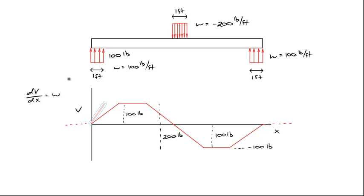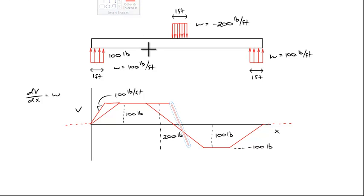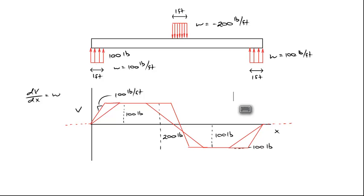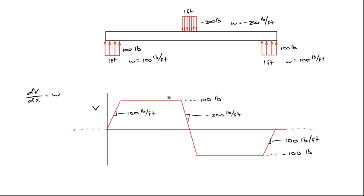Those peak values still remain the same, however we come up to that 100 pounds more quickly with a steeper slope. The slope for the support region is now 100 pounds per foot. The slope over the center becomes steeper as well. We proceed at zero slope in between, come down more steeply through the center load region. If I draw this to scale: come up to 100 pounds with a slope of 100 pounds per foot, drop down 200 pounds with a slope of negative 200 pounds per foot, and then come back up to zero with a slope of 100 pounds per foot.